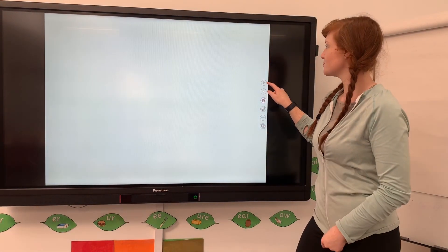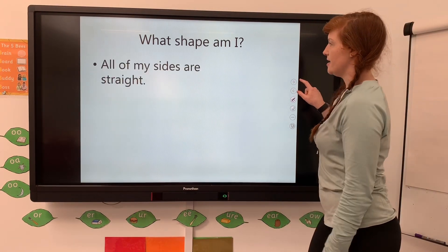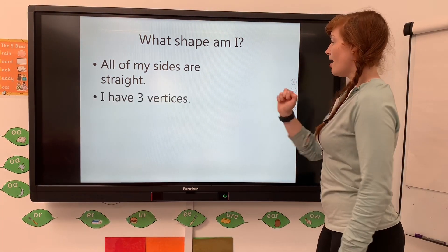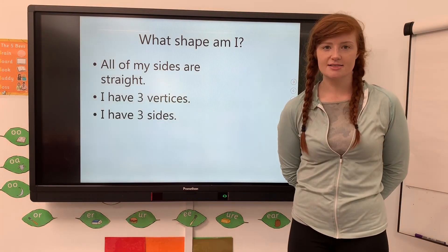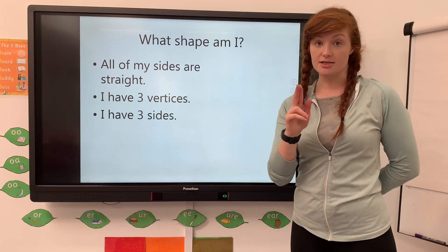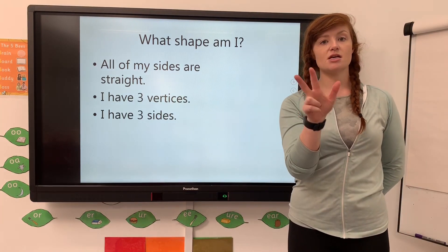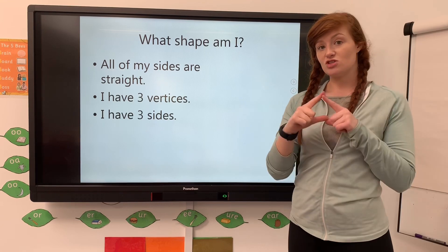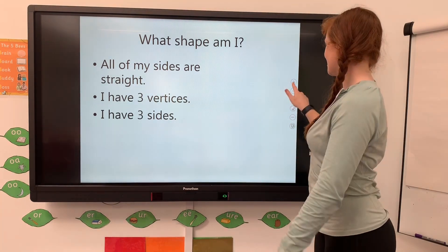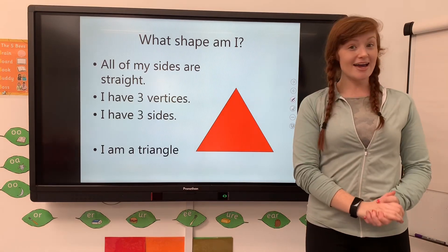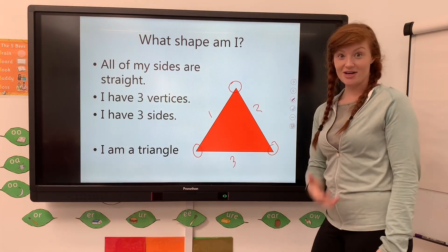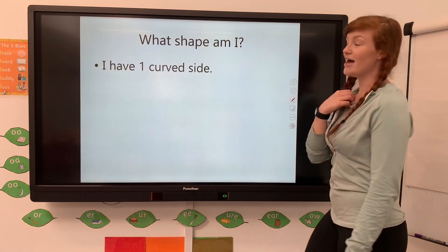Let's try the next one. What shape am I? All of my sides are straight - so no curves, it can't be a circle or a semicircle. I have three vertices and three sides. It has straight sides, three vertices, three straight sides. Can you remember what that is? I am a triangle - three vertices and three straight sides.